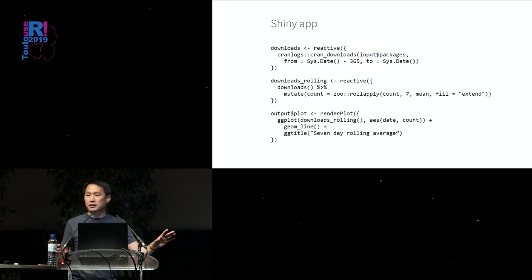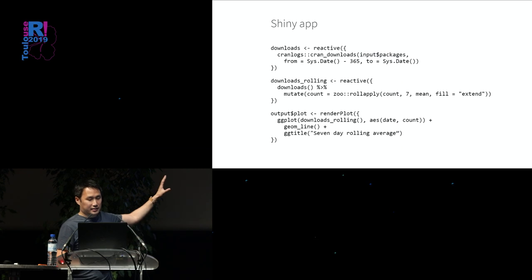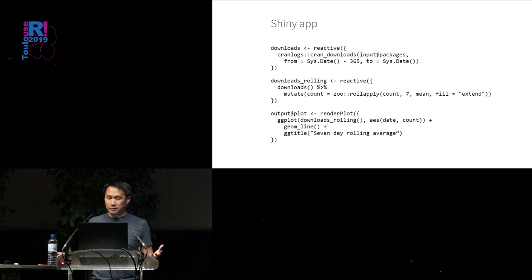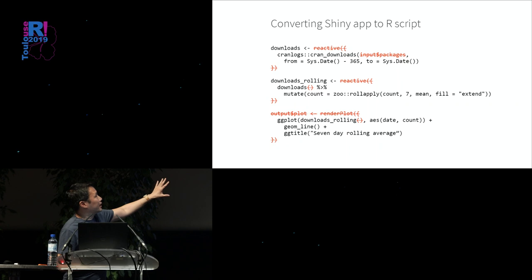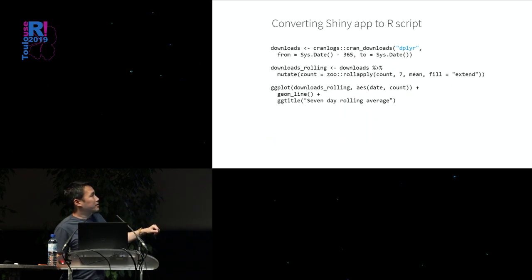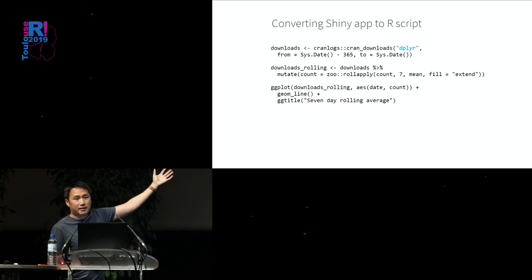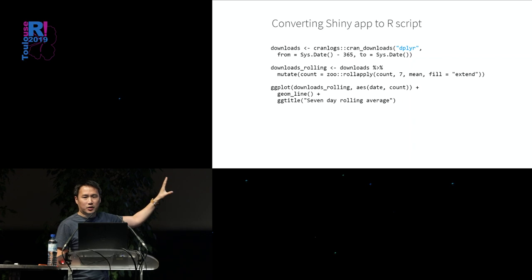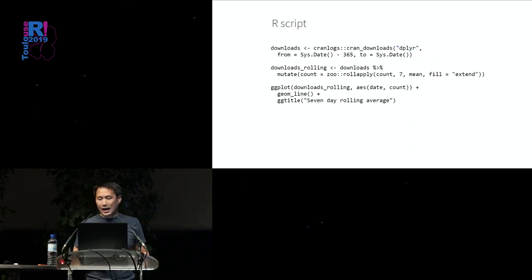Once we've done those two steps, we now have a Shiny app — this is the vast majority of its code. The big question is: how do we go the other way? How do we undo these things and end up back with straight-line code, with the exception that `input$package` has now been replaced by whatever the user typed in? This really summarizes the goal — and it's been a goal we've known about for a long time but haven't understood how to solve in a satisfying way.